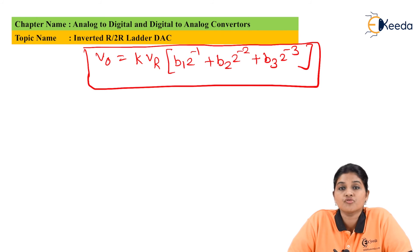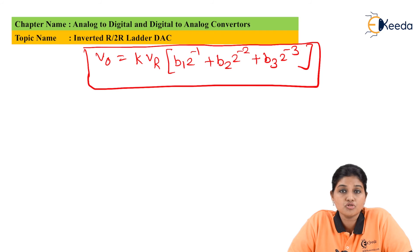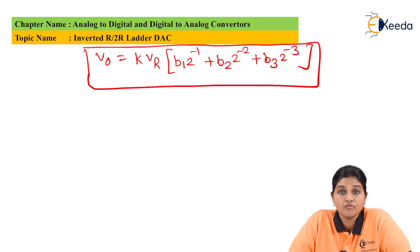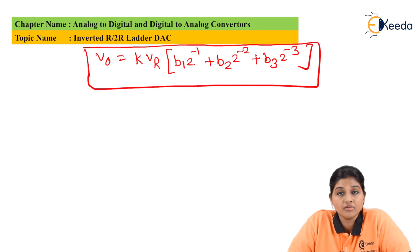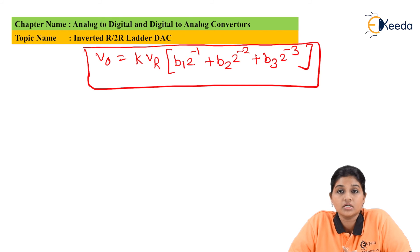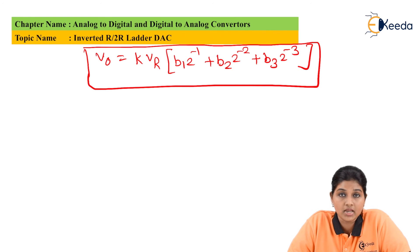The most important advantage of the inverted R2R ladder network is that it provides equal distribution of current through each node. Therefore, the current flowing through each node remains constant, and the overheating of resistors — which is a problem in binary weighted resistor and R2R ladder networks — is avoided. The drawback of binary weighted resistor and R2R ladder networks is overcome in the inverted R2R ladder network simply by interchanging the positions of LSB and MSB.